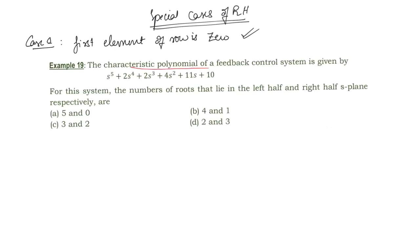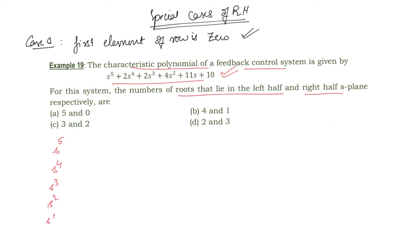The characteristic polynomial of a feedback control system is given, and we have to find out the number of roots that lie in the left half and the right half of the s-plane. For this characteristic equation, we will construct the Routh array, starting from s⁵, s⁴, s³, s², s¹, and s⁰.